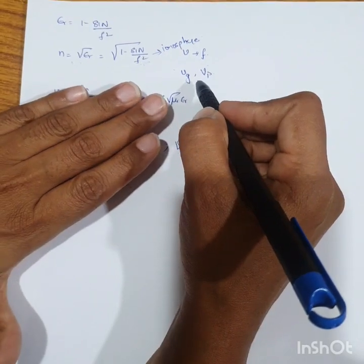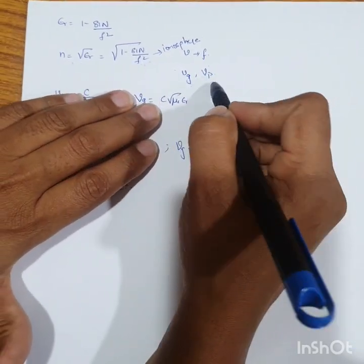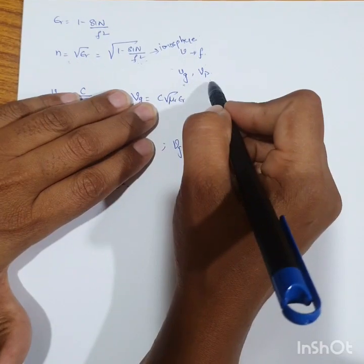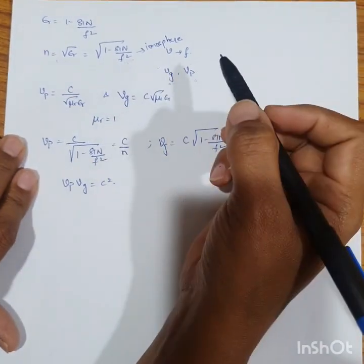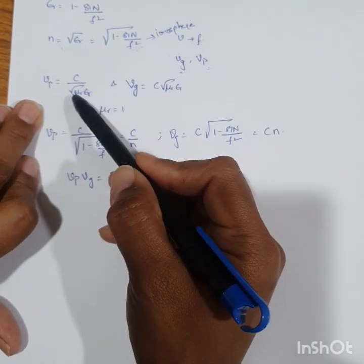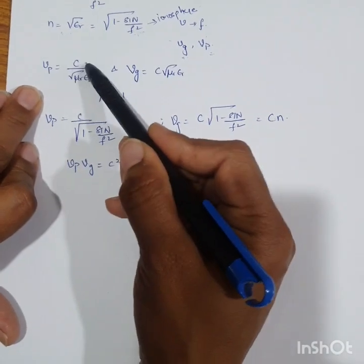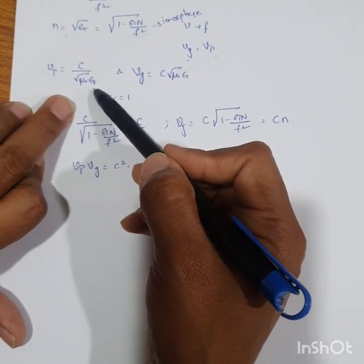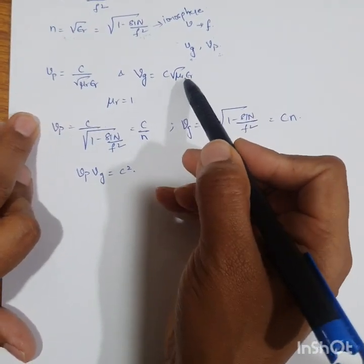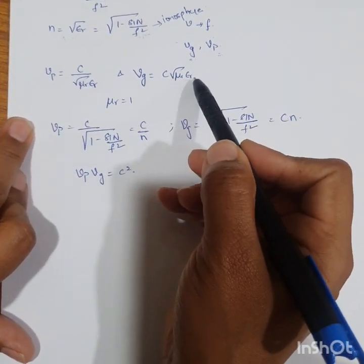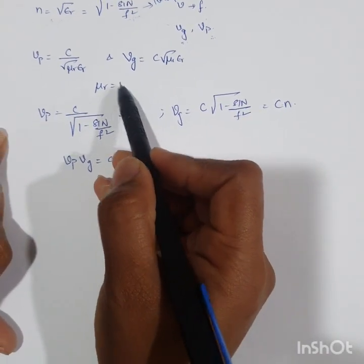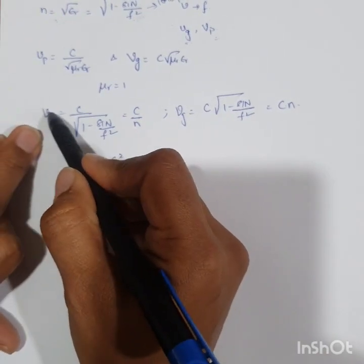Because waves propagate with different velocities, we need to consider two different types of velocities: group velocity and phase velocity. These two terms are already discussed in electromagnetic theory, where phase velocity is defined as c divided by the square root of mu_r times epsilon_r, and group velocity is defined as c times the square root of mu_r times epsilon_r.